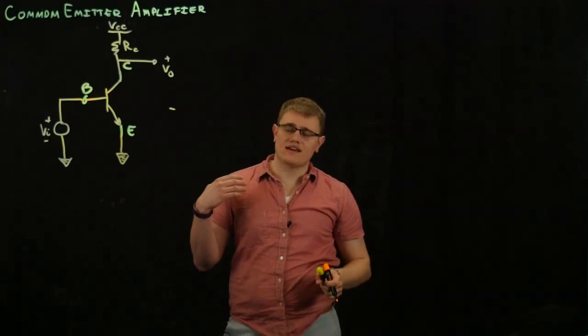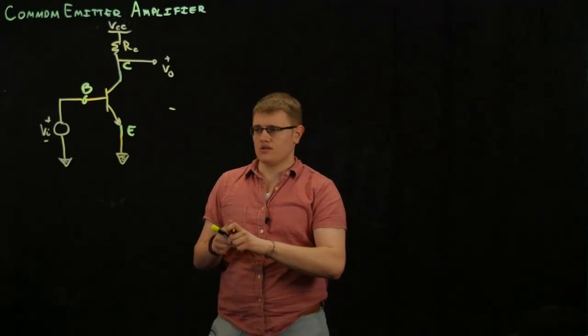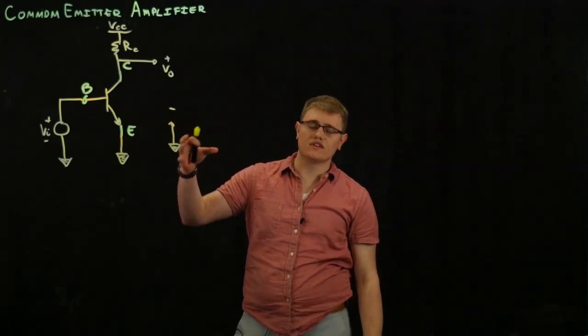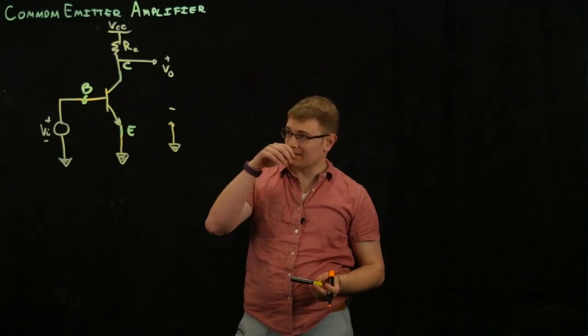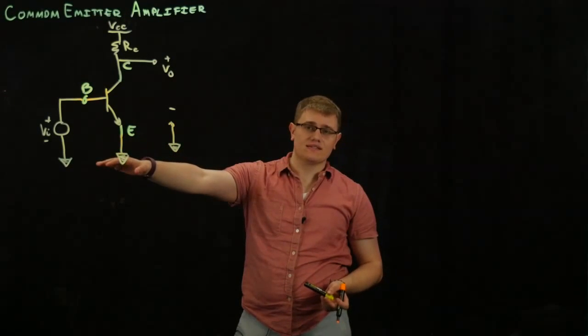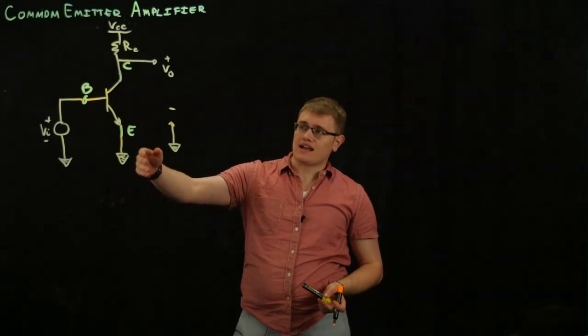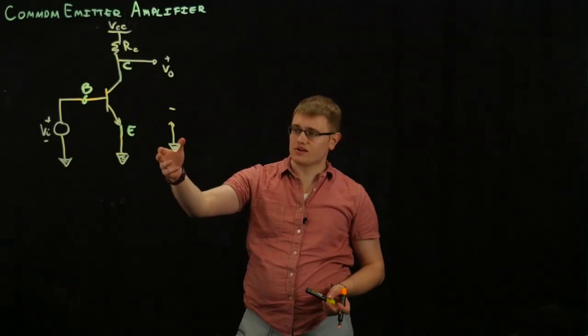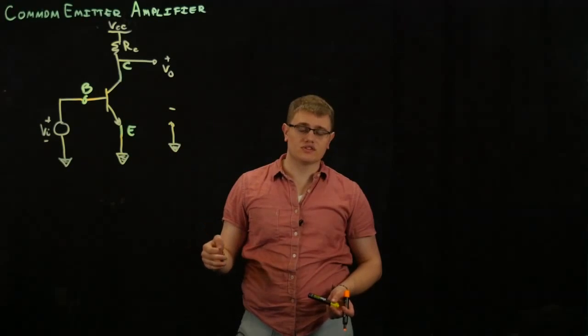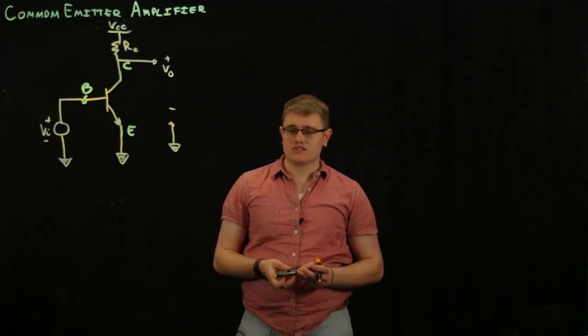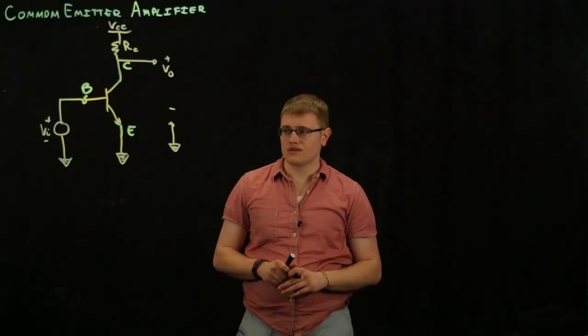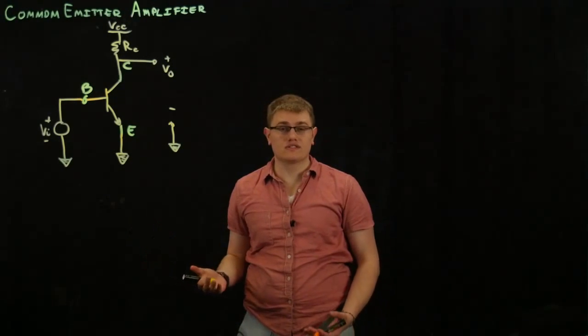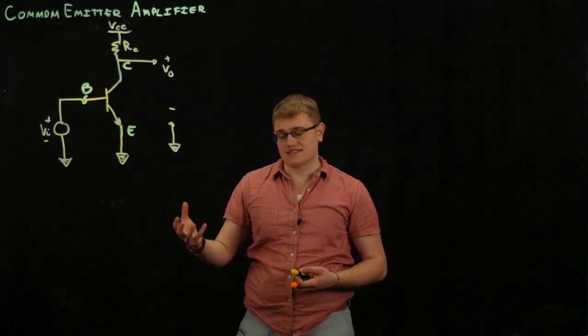Now, what makes this a common emitter configuration? Well, if we see at the base, we have a V in, which can change. At the collector, we have a VO, V out, which also changes. At the emitter, though, we have a constant voltage, something that is common throughout the circuit. And so, it is a common emitter amplifier because it is at the same voltage. It's not necessarily because it's grounded, although it usually is.